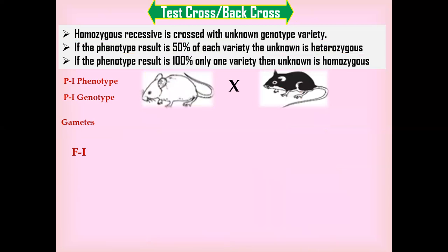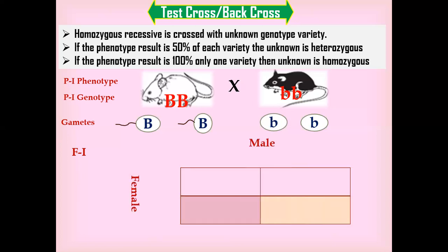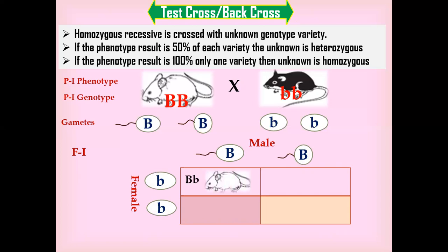Now suppose the unknown variety is homozygous dominant. In this case, the male produces only one type of sperm and the female produces only one type of egg. We calculate the F1 generation using the Punnett square, placing sperm on one side and eggs on the other. The egg with lowercase b fertilizes with a sperm carrying capital B, producing a heterozygous white variety.